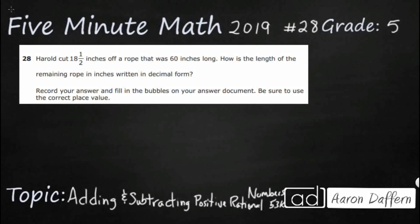Hello and welcome to 5-Minute Math. Today we are looking at the 5th grade concept of adding and subtracting positive rational numbers. This is standard 5.3k in the great state of Texas and we are using item number 28 of the 2019 released STAR test.